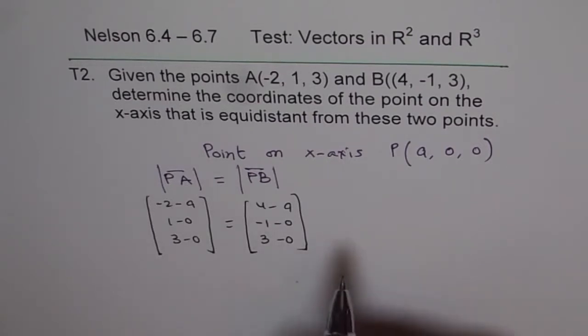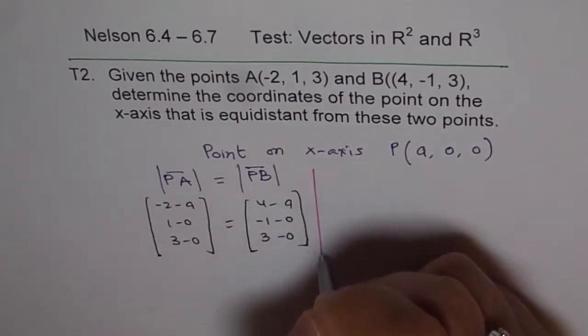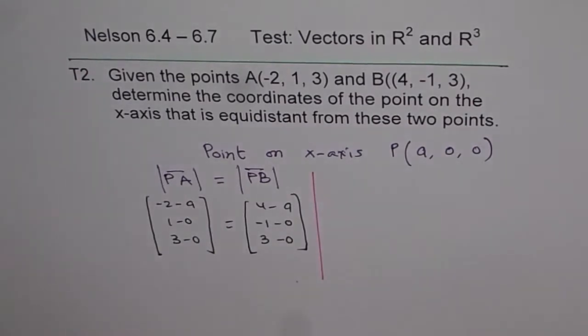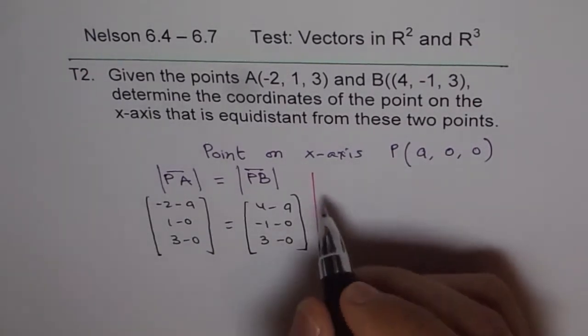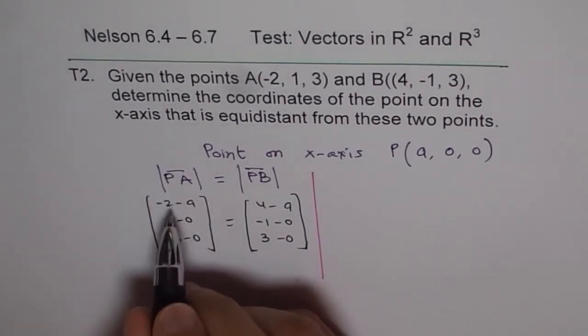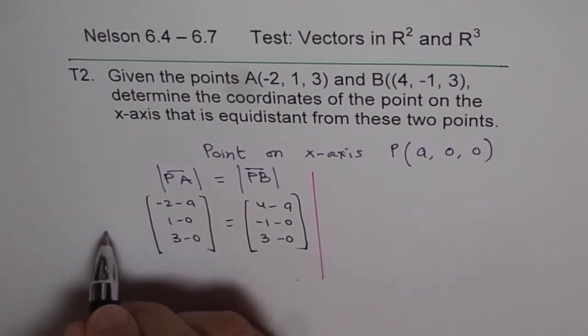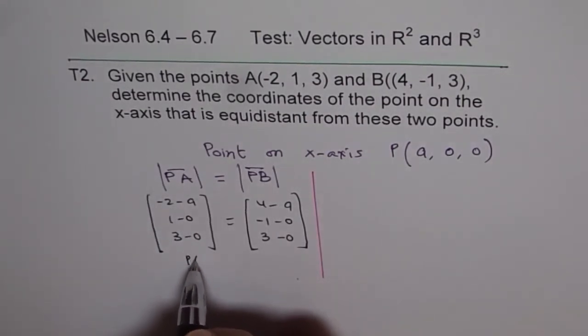Now equate their magnitudes. That means, this square plus this square. So let me do it here, to make it very clear. To equate their magnitudes, these are the vectors. So we have the magnitude of PA will be what? This is vector PA, right?